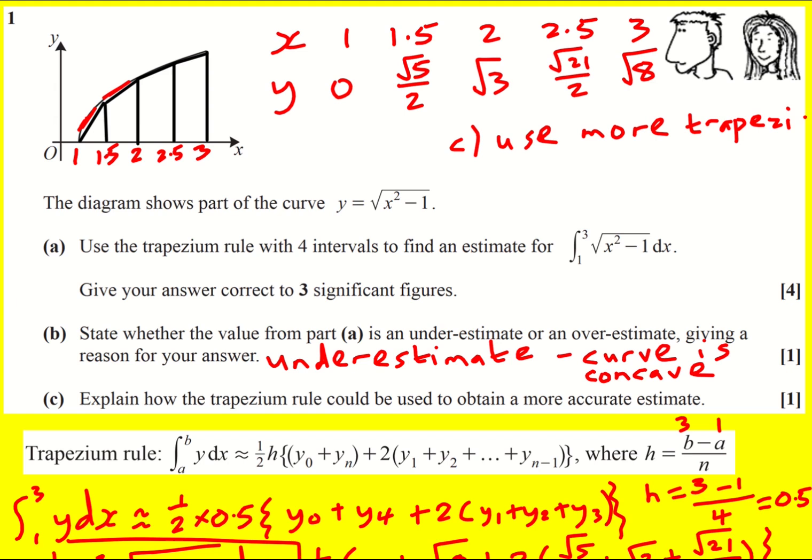Instead of using four, we could use eight, and then we could see how our answer compares. We could use 16 until we get the required accuracy in our answer that we're looking for. So use more trapezia over the same interval.